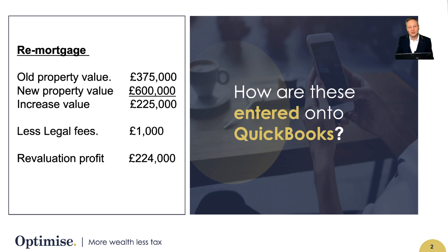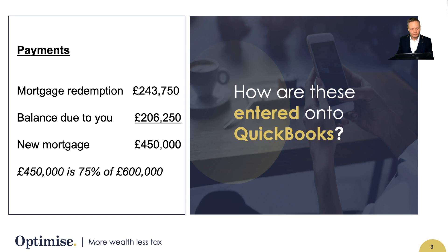Please do note that that is not taxable, but it does need to be shown now on the profit and loss. You may find a situation whereby you've got a mortgage redemption of £243,750, which is the old mortgage that was in place, and you've got a balance that's due to you now of £206,250, and basically that will come back to the mortgage of £450,000.